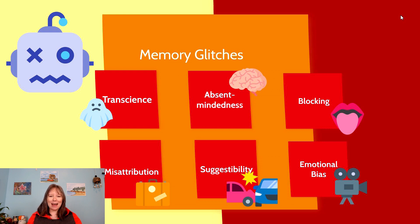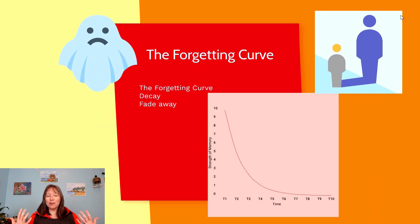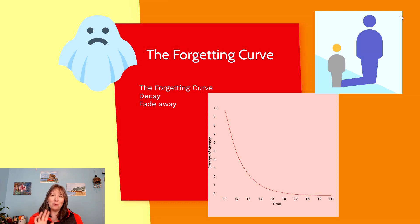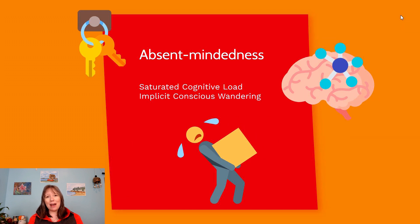There are six memory glitches we'll cover: transience, absent-mindedness, blocking, misattribution, suggestibility, and emotional bias. Starting with transience — this is the idea that over time our memories fade away. It's known as decay or the forgetting curve. This is totally normal. If we don't constantly try to remember our memories, they will fade. At the same time, memories we are constantly rethinking or retelling get strengthened, so we have fewer but clearer memories as we get older.